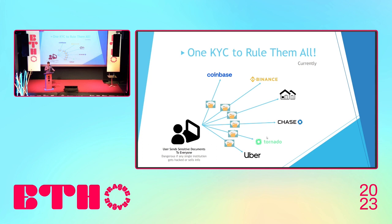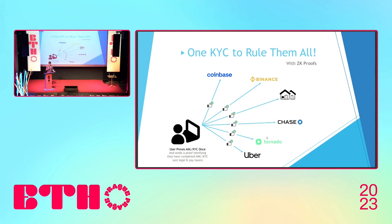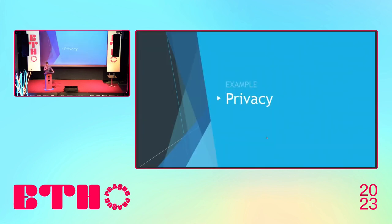All these identity use cases lead to the concept of one KYC, one identity to rule them all. Currently, if you sign up for Coinbase, a bank, or as an Uber driver, you have to provide all your information — tax documents, passport, even a 3D facial scan — which is really bad if any of them get hacked. With ZK, maybe your bank or government could attest that this is a legal person who pays their taxes, and you just send the proof to Coinbase, Binance, or to buy a house.